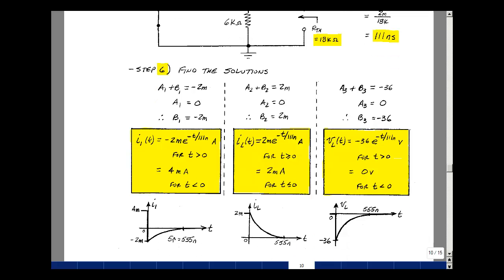Okay, let's sketch these. The first one here, we have 4 milliamps, and then we're going to jump to minus 2. And then in 5 time constants, we're going to go back to 0. So 5 times 111 nanoseconds is 555 nanoseconds, or 0.55 microseconds. Let's draw a little bit of an exponential-looking picture here.